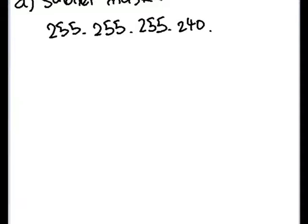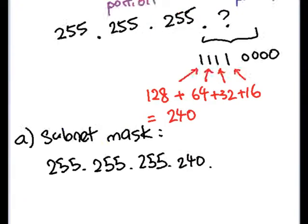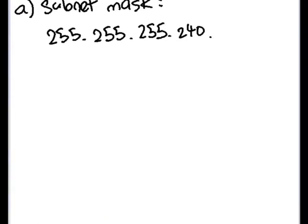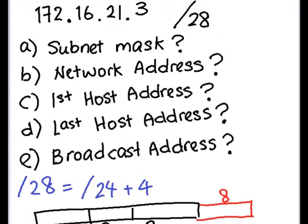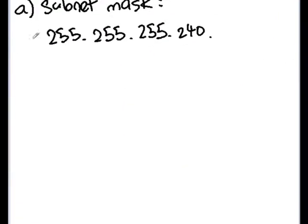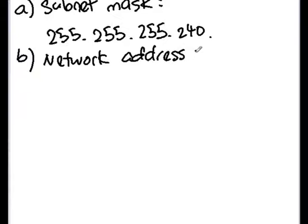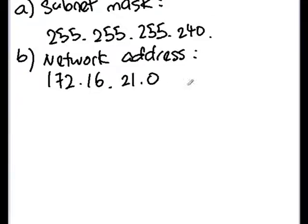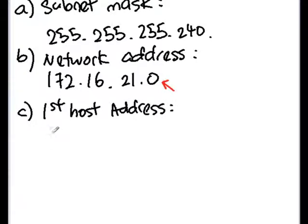After finding the subnet mask, we can proceed to find the network address. Our IP address is 172.16.21.3, and the network address always starts from 0, so the network address is 172.16.21.0. The first host address is the next address: 172.16.21.1.